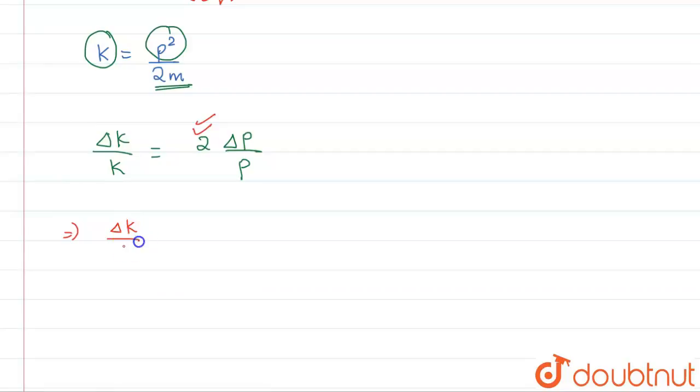That means if we write delta k by k into 100 must be equal to 2 into delta p by p into 100.